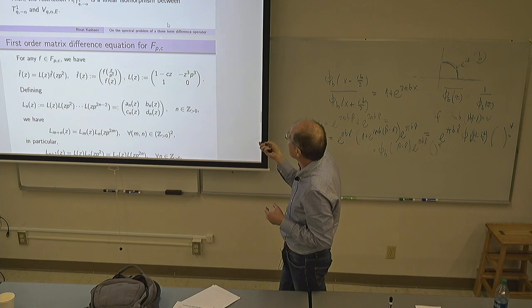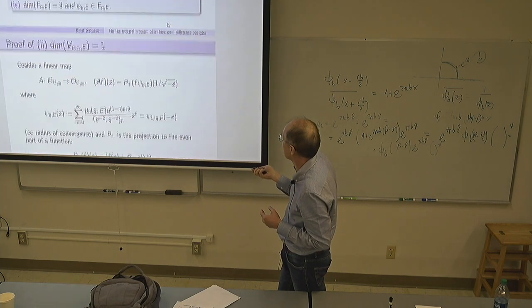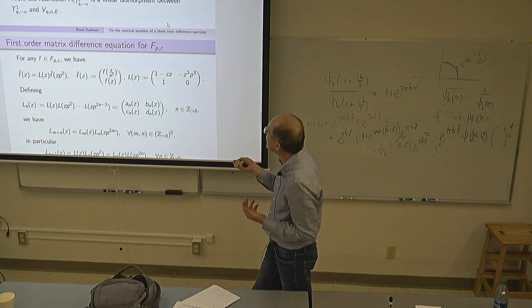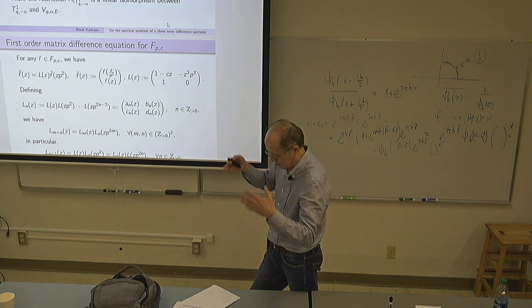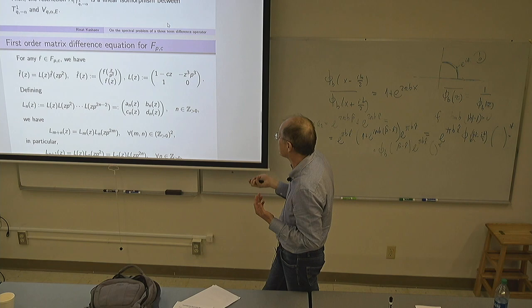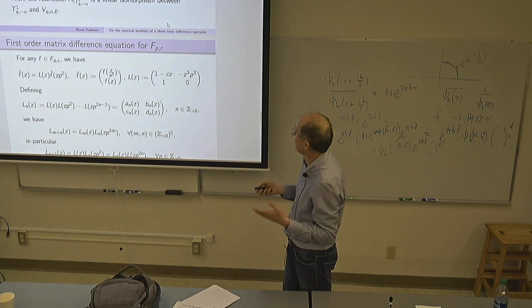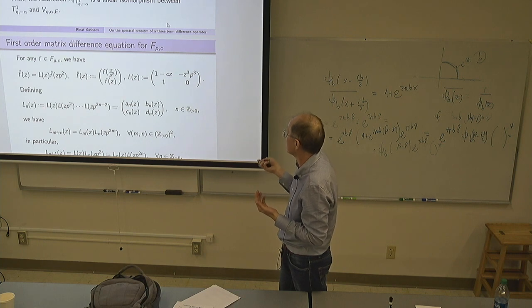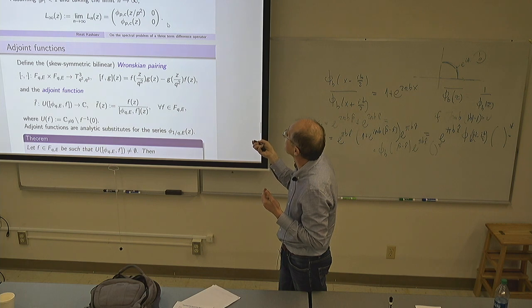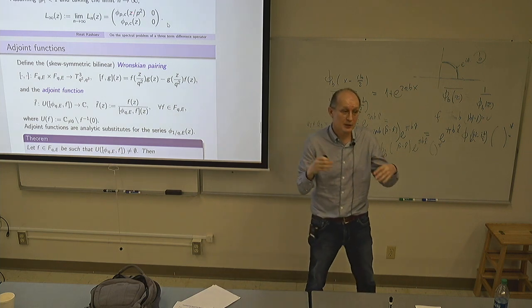Turning to the first vector space in the list, we construct one specific solution. The second-order q-difference equation can be formulated as a first-order matrix equation, and we can iterate it. The iteration converges like a q-Pochhammer symbol when q is inside the unit disc. In the limit, we recover the power series solution with infinite radius of convergence, where the coefficients are given in terms of the orthogonal-like polynomials.